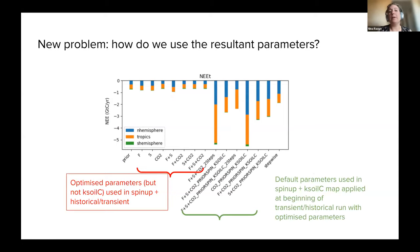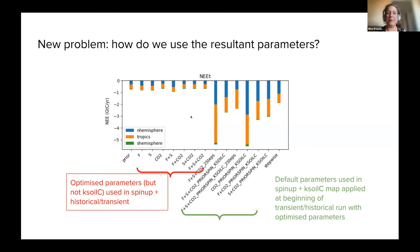Another problem is what we do with the parameters we find alongside k_soil_c. It is meant to encode information about land use change history and the transient run. If we don't use it, we get very different results — shown by the small bars on the left — compared to when we do use it, giving the very large bars on the right.